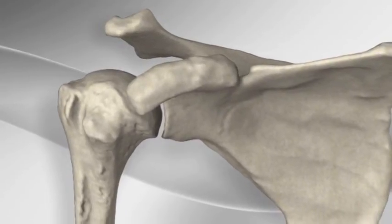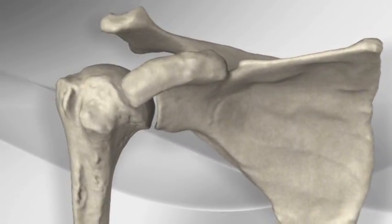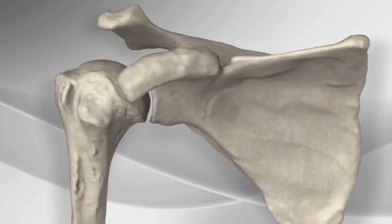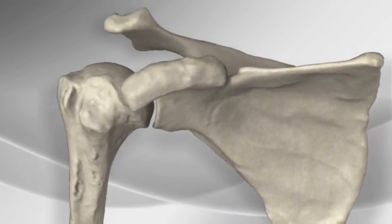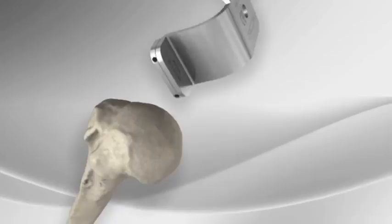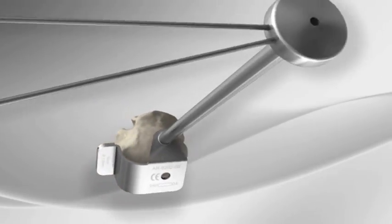The Universe 2 Total Shoulder is a device designed to treat osteoarthritis of the shoulder by replacing the degenerative portions of the shoulder joint. The surgeon begins by exposing the shoulder joint.